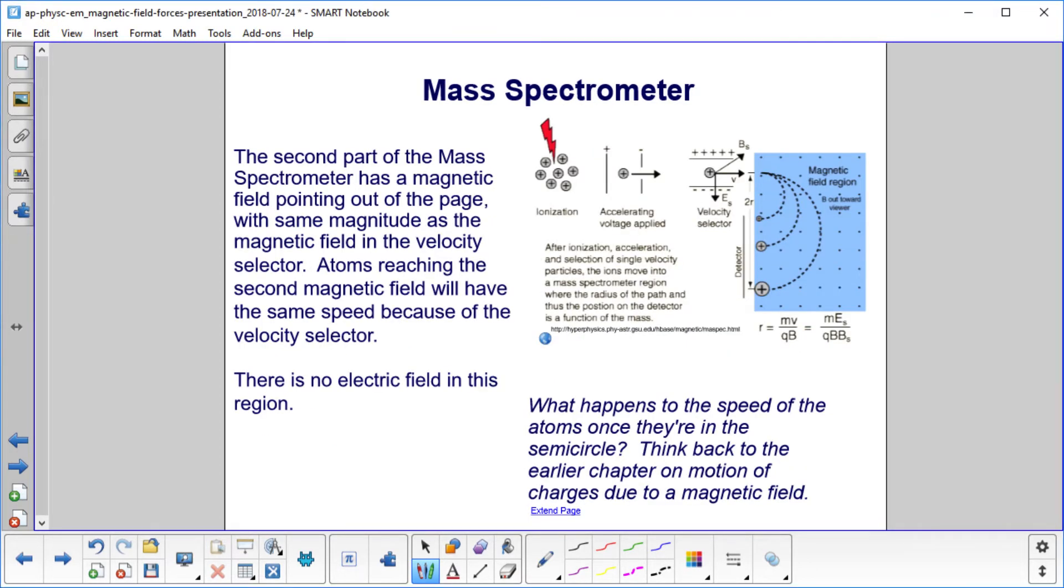The second part of the mass spectrometer is over here in the blue. This has a magnetic field pointing out of the page with the same magnitude as the magnetic field in the velocity selector. Atoms reaching the second magnetic field will have the same speed because of the velocity selector. So all the atoms or molecules coming in have the same velocity. There is no electric field in this region.